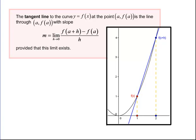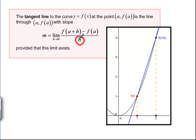What we do is instead of having to factor whatever the x minus a term is out of the top of the equation, we rewrite the equation so that we only have to factor an h out. In this picture they called it x, but we're going to call it a. This is our point a that we want to find the slope of the tangent line at, so this is our height f of a.